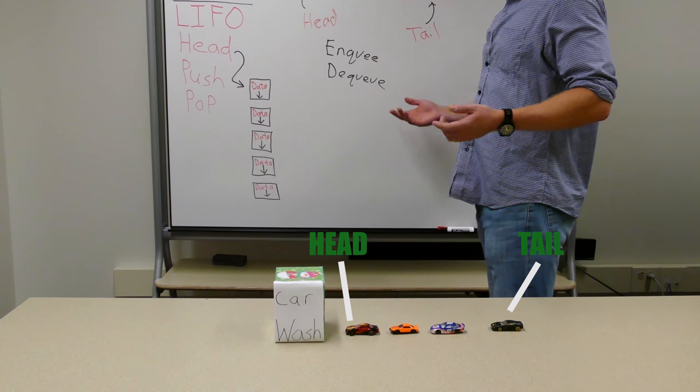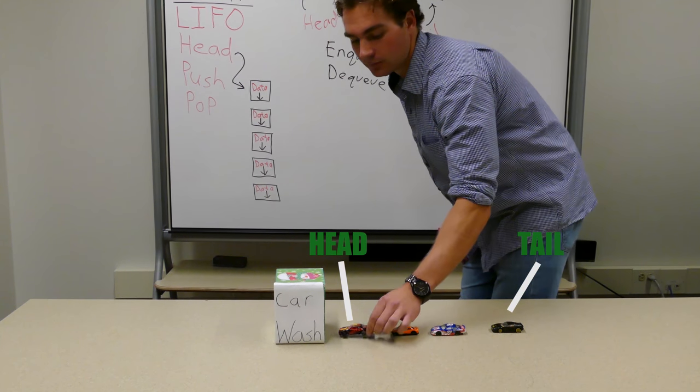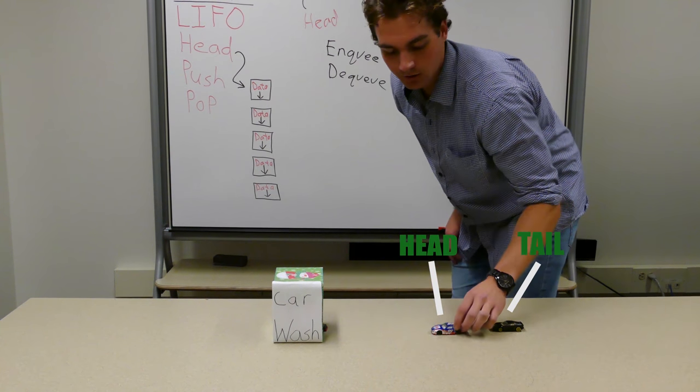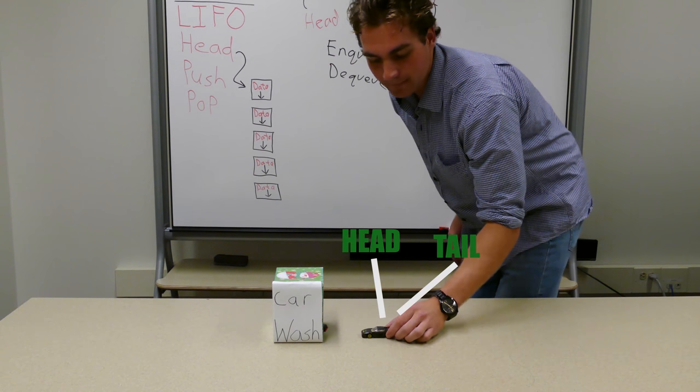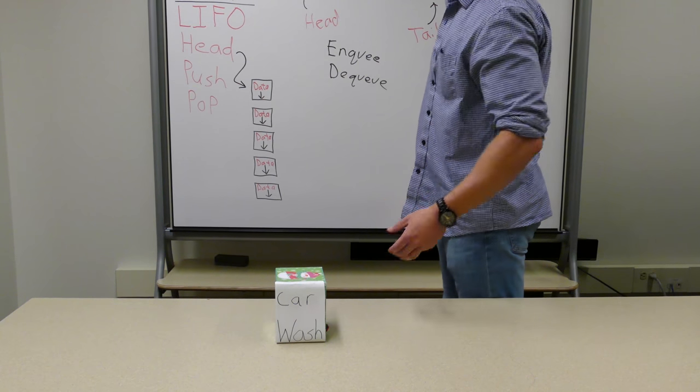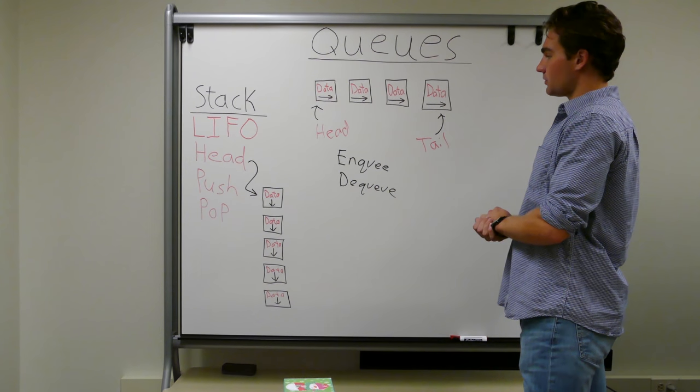Dequeue is when you remove a node from the front of the queue. So when you dequeue the black and red car, it goes in, gets its car washed. Dequeue this one, goes in, gets its car washed. Dequeue the blue, in she goes. Dequeue the black silver, in she goes. All the cars get their cars washed. Everyone's happy in Hot Wheel Land. And those are the operations.